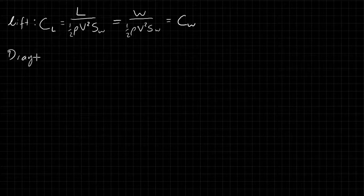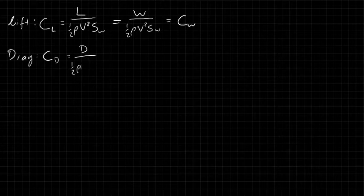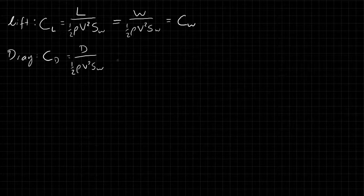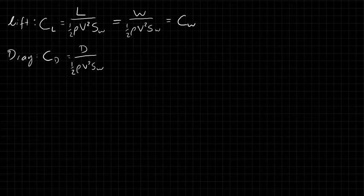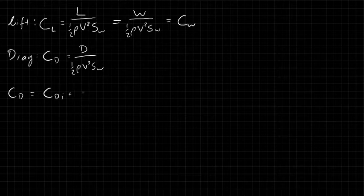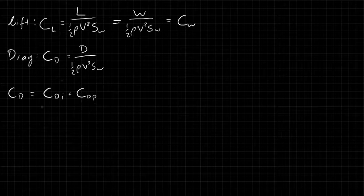Now let's talk about drag. Drag is usually described in terms of a drag coefficient, which is drag divided by one-half rho v-squared times S-w. The drag has two parts: an inviscid part, or induced drag coefficient, and a parasitic drag coefficient. The total drag coefficient equals the induced drag coefficient plus the parasitic drag coefficient. Parasitic drag comes from things like viscosity or form drag, while induced drag is drag induced by the lift only.